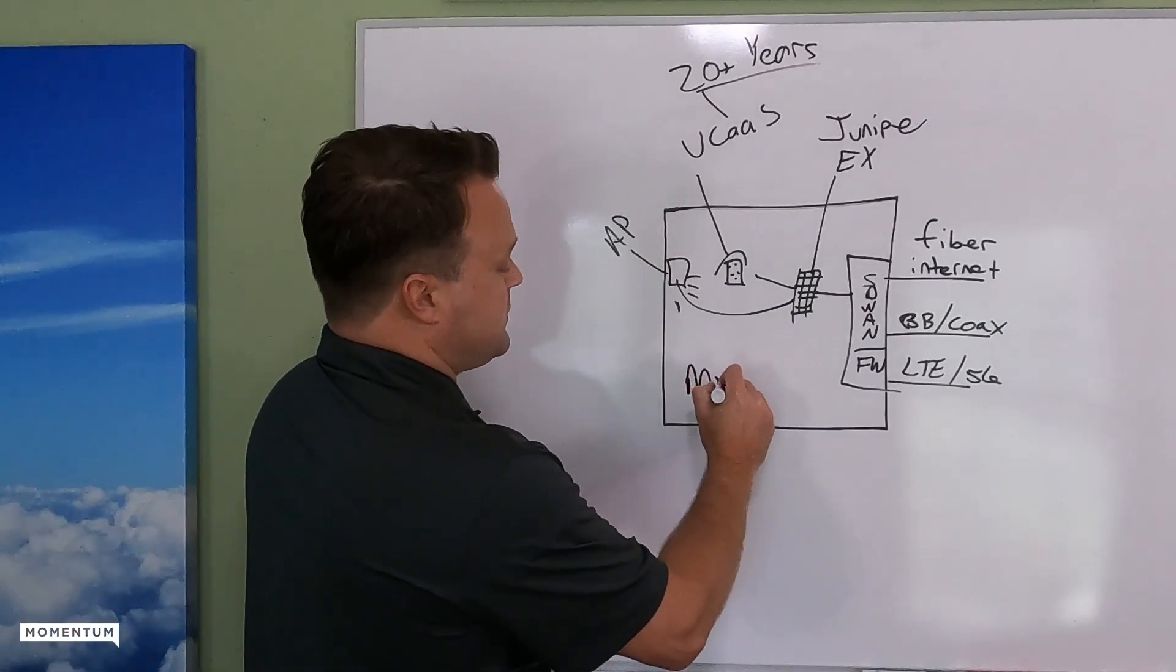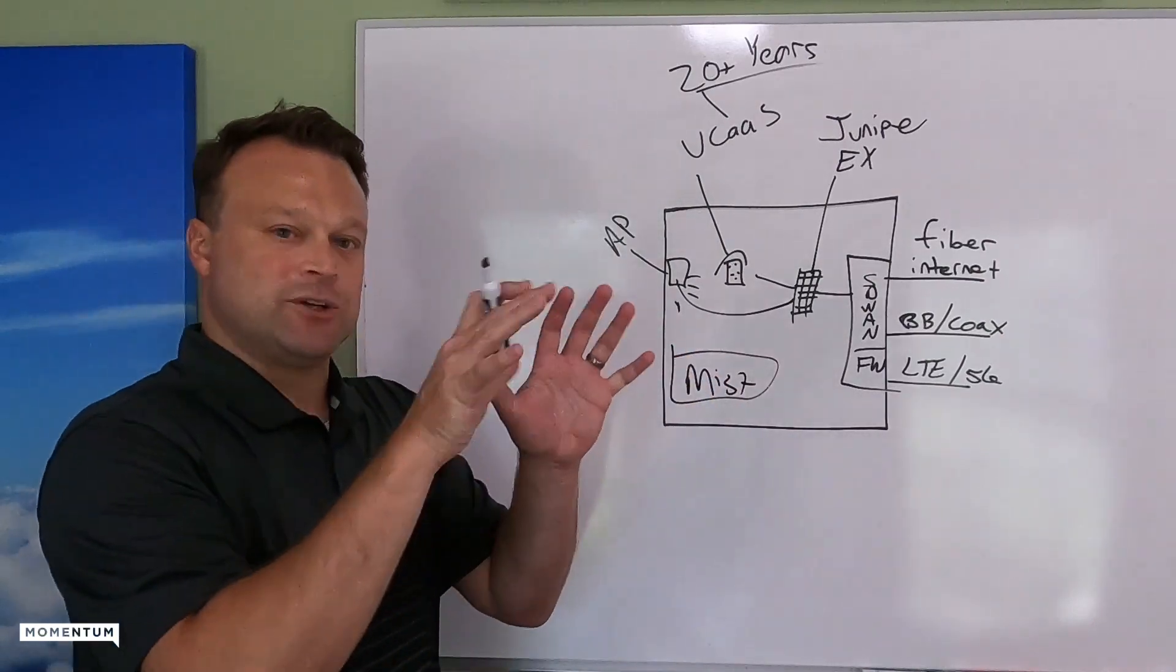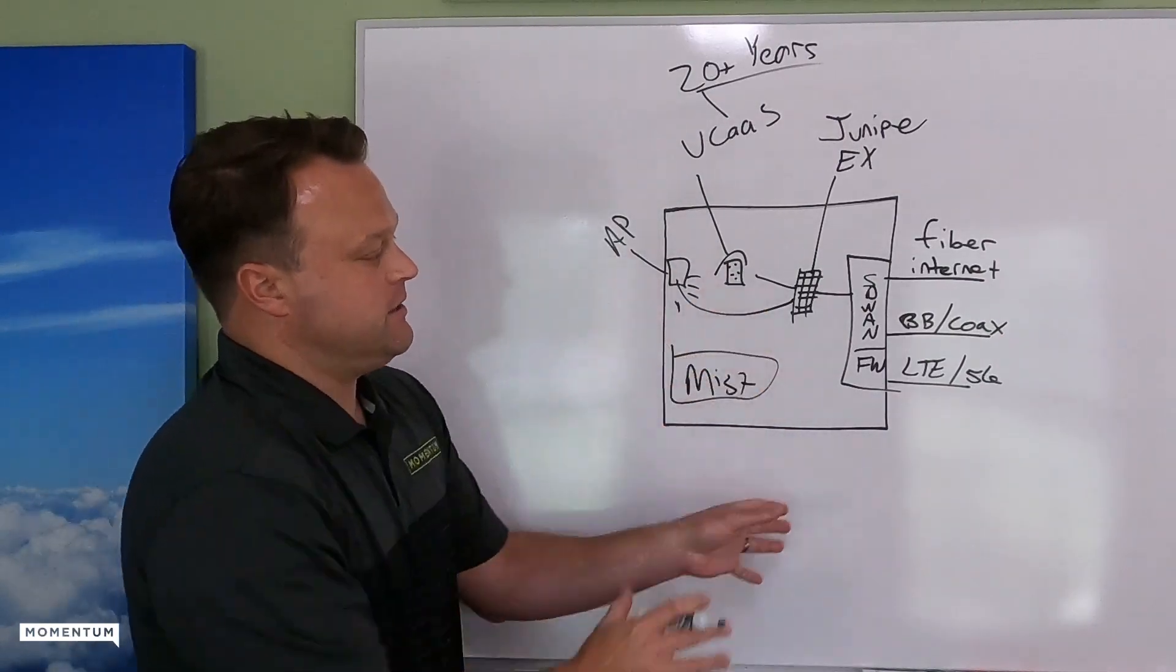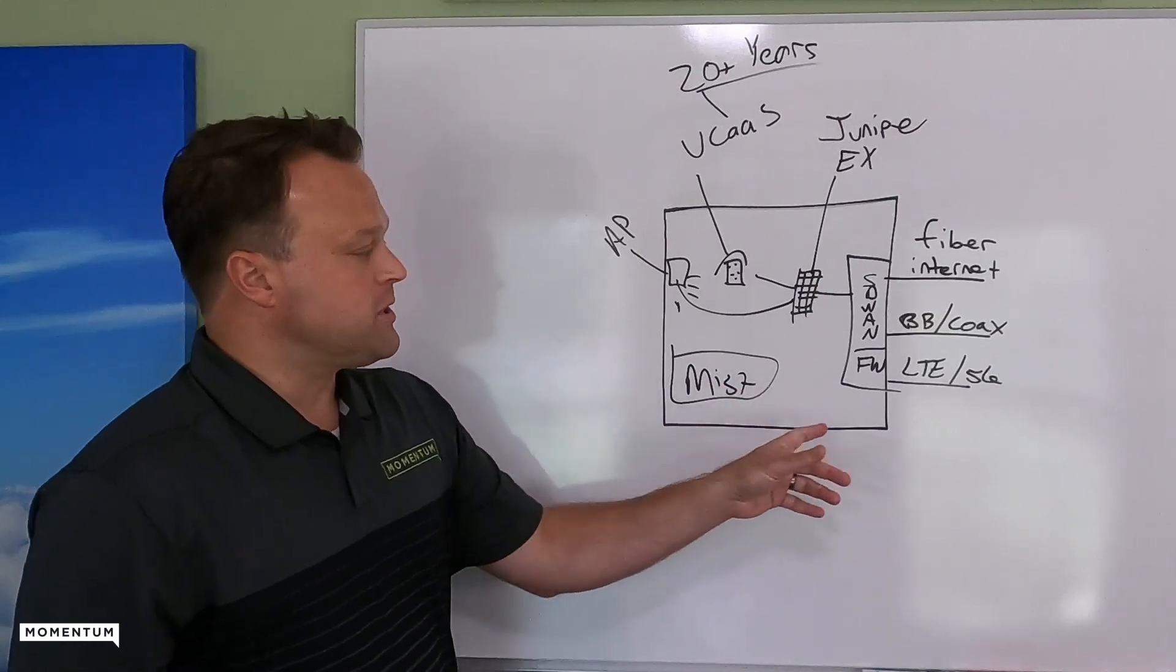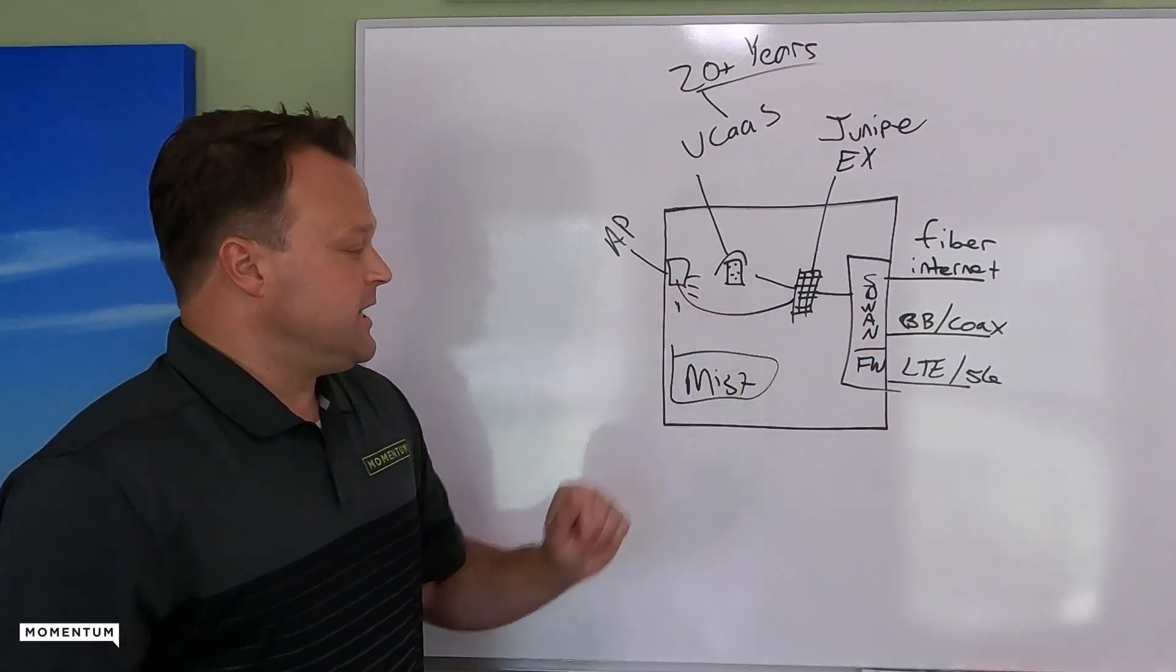Now, what pulls all this together is MIST. So MIST is that single pane of glass where you're able to manage the whole enterprise. Multiple locations, the firewalls, SD-WAN, the switches, the APs.